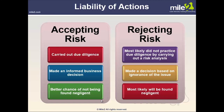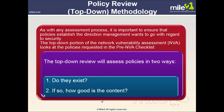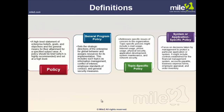The policy review is the top-down methodology. It's important to ensure policy establishes the direction management wants to go regarding security. The top-down portion of the NVA looks at policies requested in the pre-NVA checklist, assessing policies in two ways: do they exist, and if so, how good is the content? Policy is a high-level statement of enterprise beliefs, goals, objectives, and the general means of attainment for the specified subject area. Policy should be brief and set at a high level.